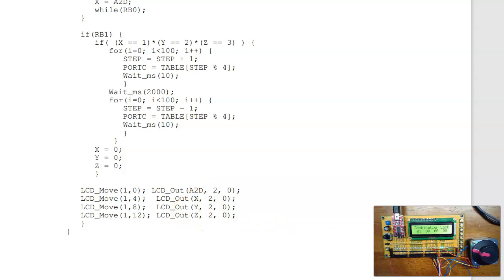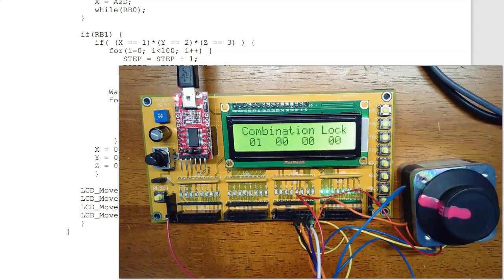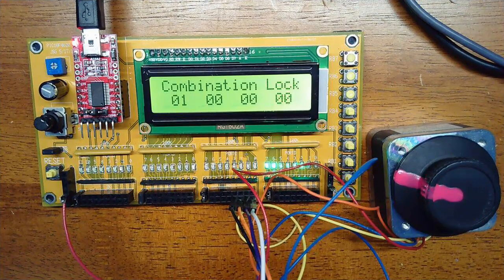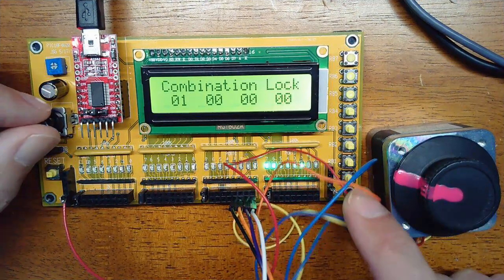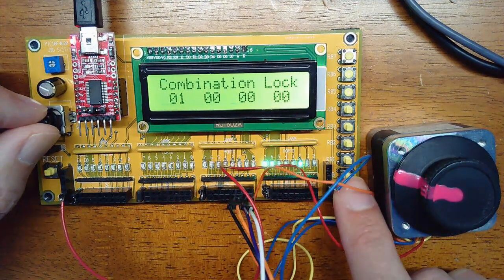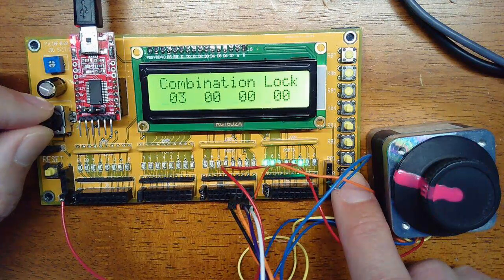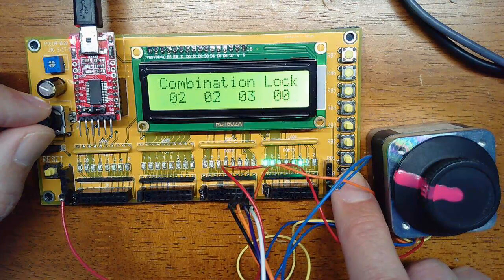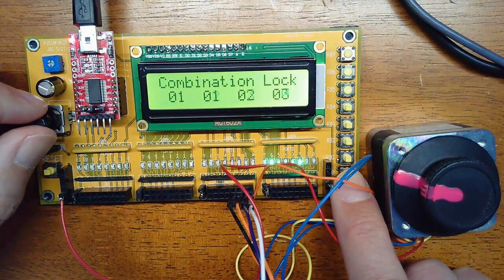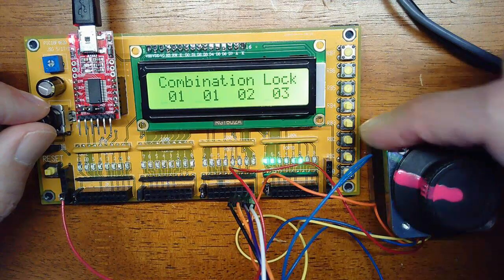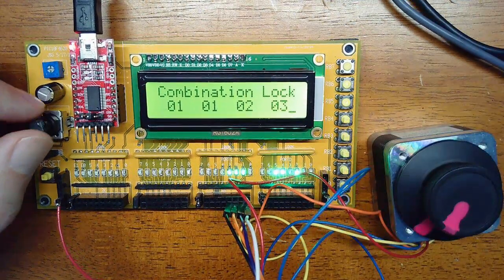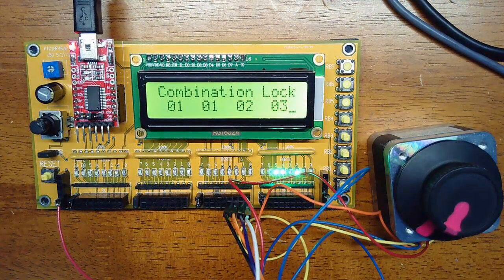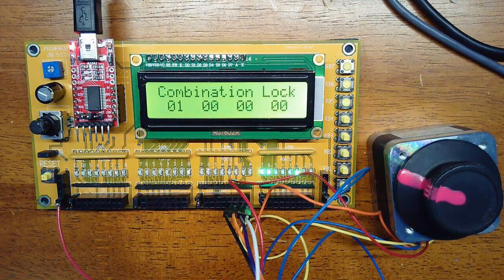So again, kind of what that does is I input the numbers. So there's 3, 2, 1, test. If correct, it spins 180 degrees, then it comes back.